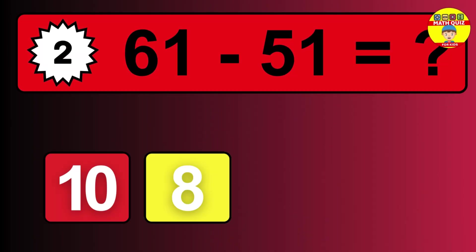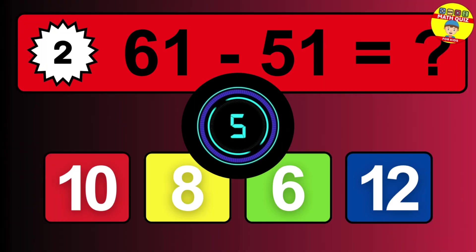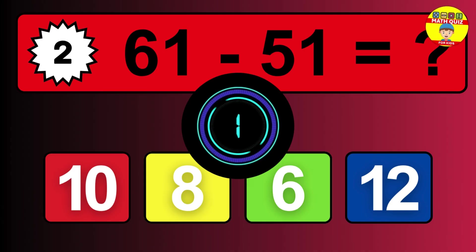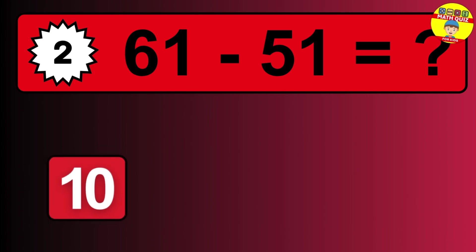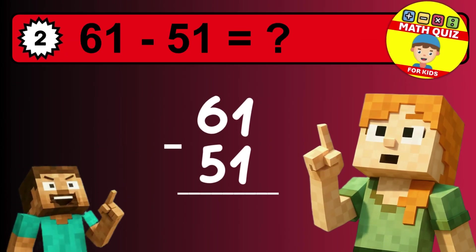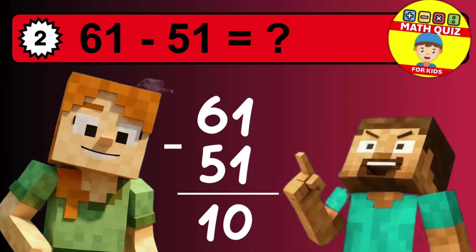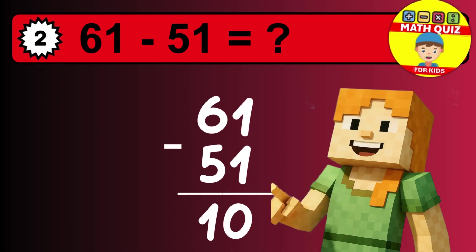What is 61 minus 51? Time to think. Let's solve this step by step. We start with the units: 1 minus 1 is 0. Then we go to the tens: 6 minus 5 is 1. The final answer is 10.